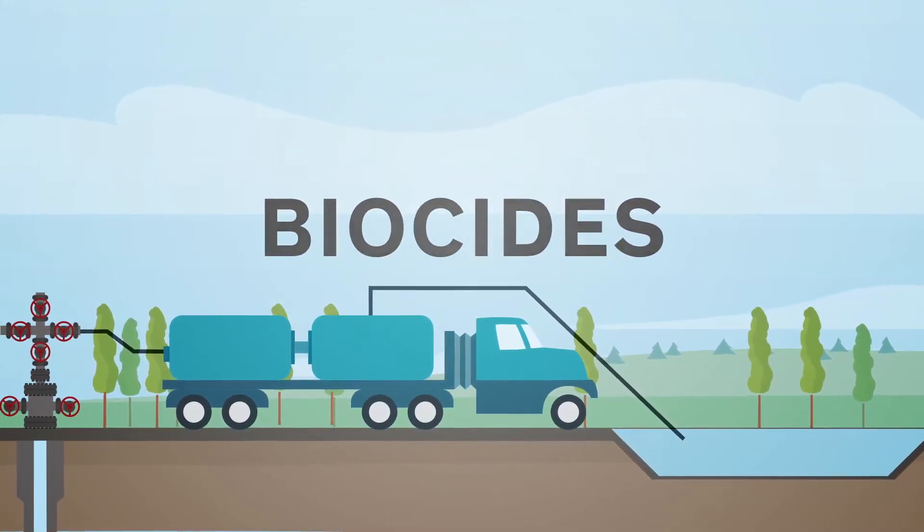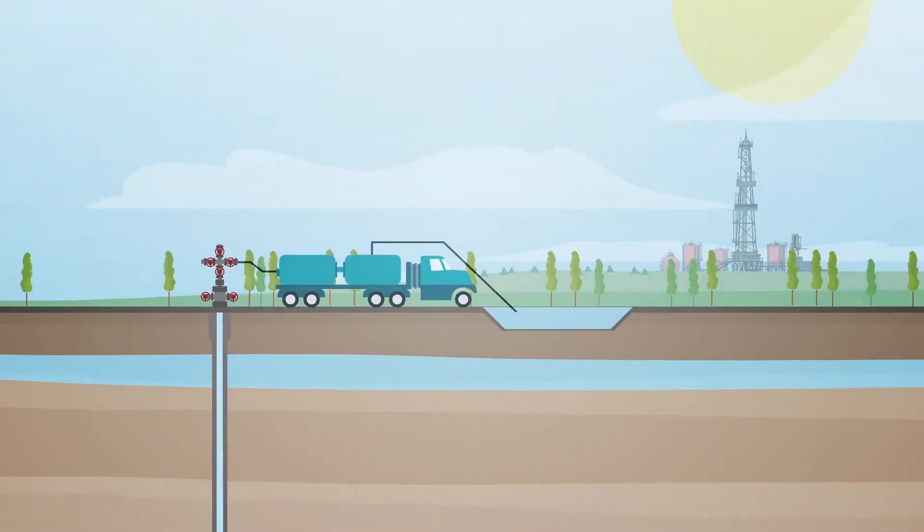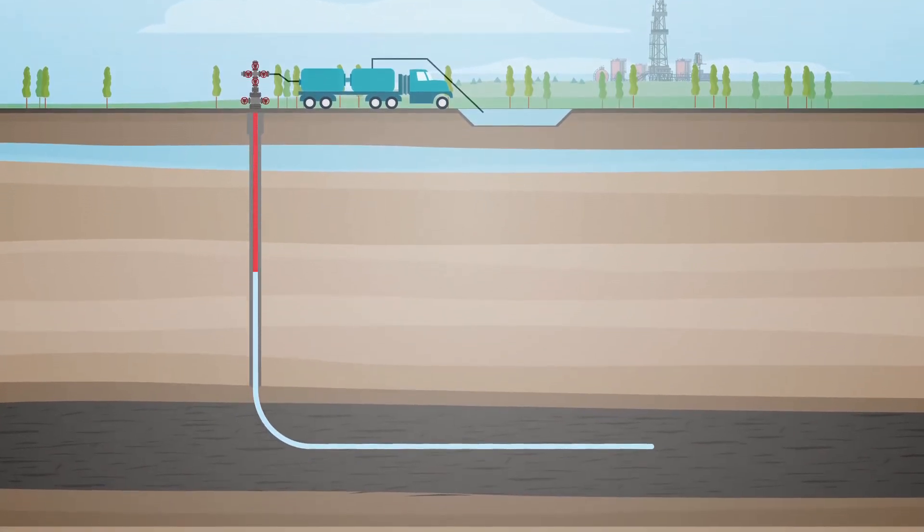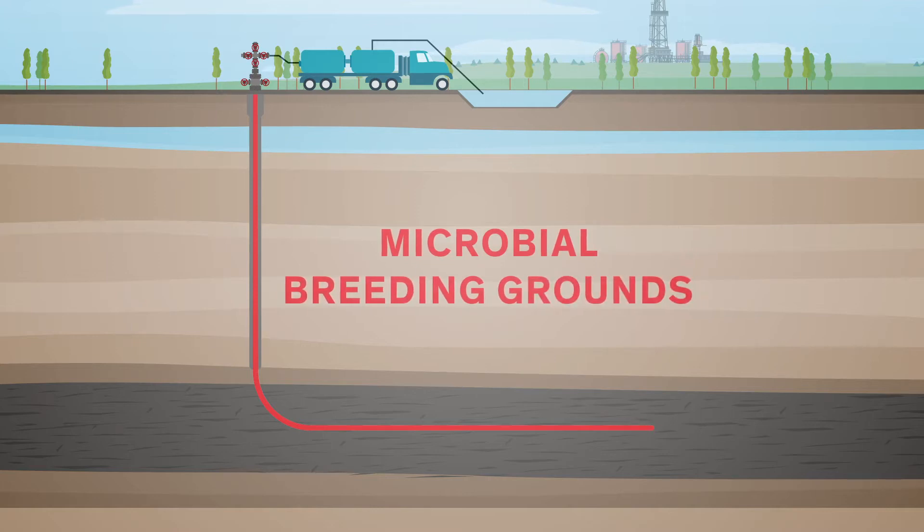Bugs need two things to grow: water and food. Both are abundant in all parts of the hydraulic fracturing process. As the frac fluid passes through the well, there are countless points that make a perfect breeding ground for bugs to grow.